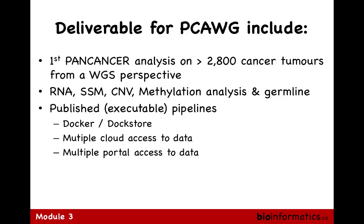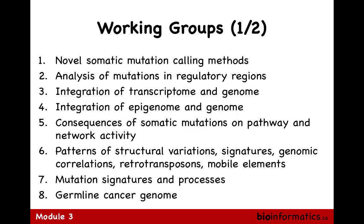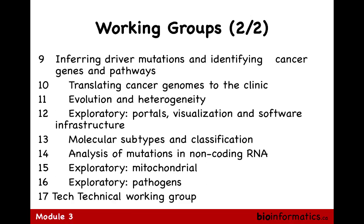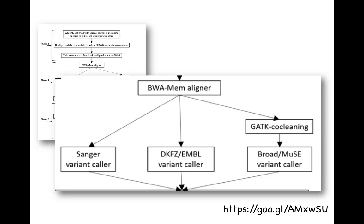PCAWG has 16-17 working groups that have all looked at various aspects and are publishing papers - about 42 papers now, many in bioRxiv preprint stage. This is the first pan-cancer analysis of whole genomes with integration of RNA, simple somatic mutations, copy number variations, methylation, and germline variants. One key activity was a technical working group that developed pipelines for alignment - all genomes aligned the same way - and it turns out that aligning things all the same way makes a significant difference.